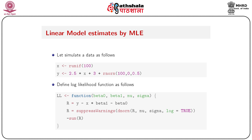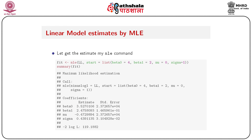Now we apply `mle` to a linear model. Simulate data: x from `runif(100)`, y = 2.5*x + 3 + rnorm(100, 0, 0.5). Define the log-likelihood function as `ll = function(beta0, beta1, mu, sigma) { r = y - x*beta1 - beta0; suppressWarnings(dnorm(r, mu, sigma, log = TRUE)); return(-sum(r)) }`, returning the negative log-likelihood.